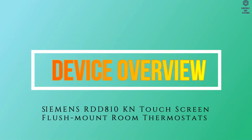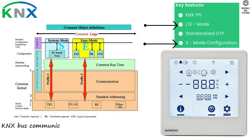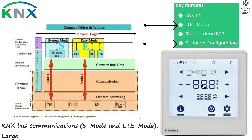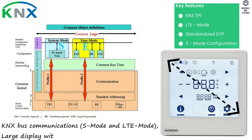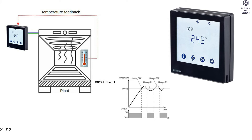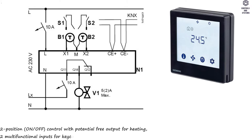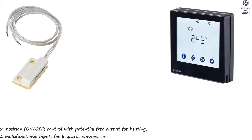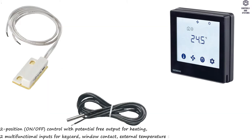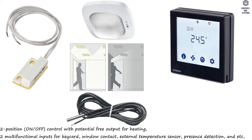Device Overview: KNX Bus Communications, S Mode and LTE Mode. Large display with backlight. Two-position on/off control with potential-free output for heating. Two multifunctional inputs for keycard, window contact, external temperature sensor, presence detection, and more.